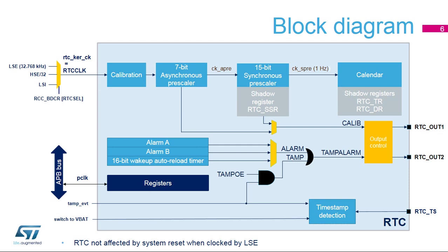Here's the RTC block diagram. The RTC has two clock sources. The RTC clock, named RTCCLK, is used for the RTC timer counter, and the APB clock is used for RTC register read and write accesses. The RTC clock can use either the high-speed external oscillator (HSE) divided by 32, the low-speed external oscillator (LSE), or the low-speed internal oscillator (LSI).